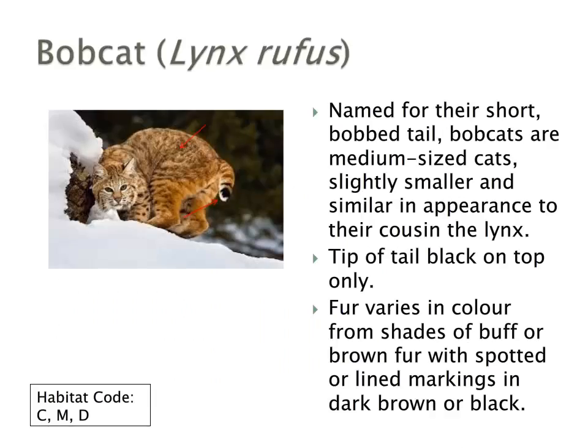The bobcat is named for its very short bob tail. It's similar in appearance to its cousin the lynx, but the tip of the tail is black on the top only, not on the bottom — a unique feature. The fur varies in colour from shades of brown or black, and notice it has spotting, a pattern not present in the lynx. The ear tufts present on the lynx are not present on the bobcat.